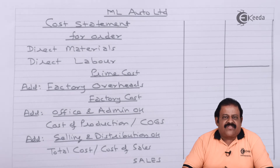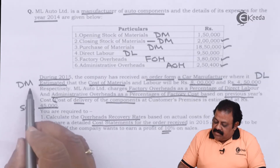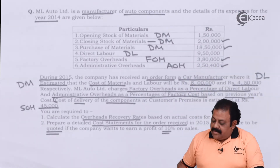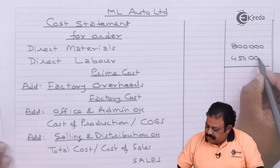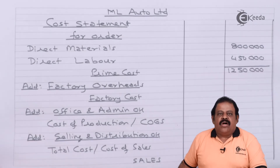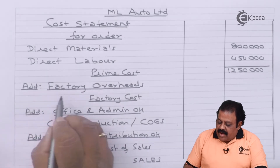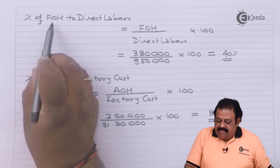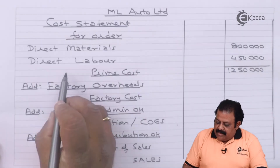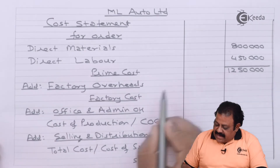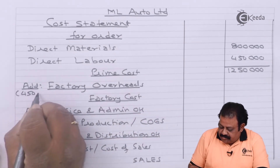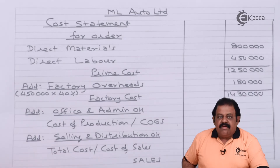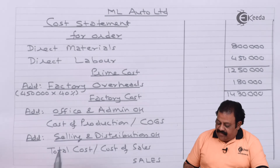Let us proceed to prepare the cost statement for the order received from the car manufacturer. We have actual information of direct material estimated at 8,00,000 and estimated direct labor of 4,50,000, so we got prime cost of 12,50,000. Now we are required to add factory overheads based on last year's details. Factory overheads are based on direct labor at 40%, and estimated direct labor is 4,50,000, so we take 40% of this as factory overheads, giving us factory cost of 14,30,000.